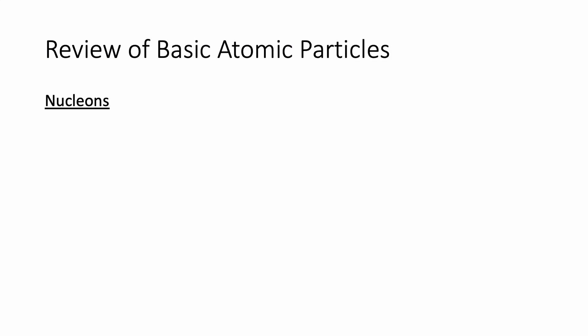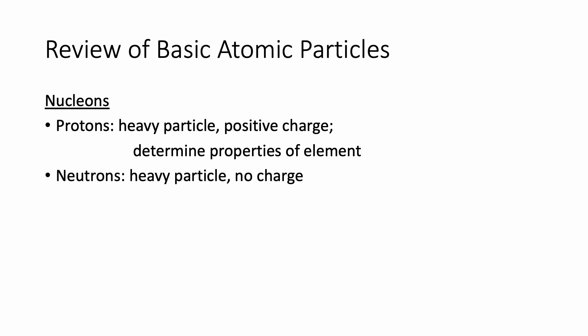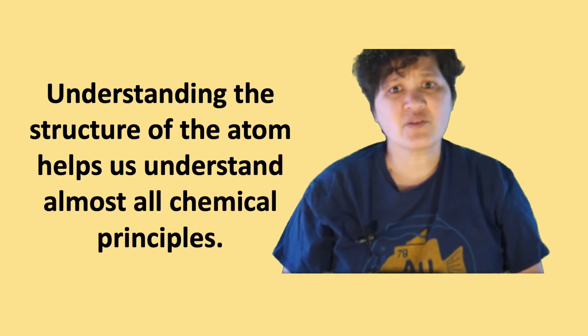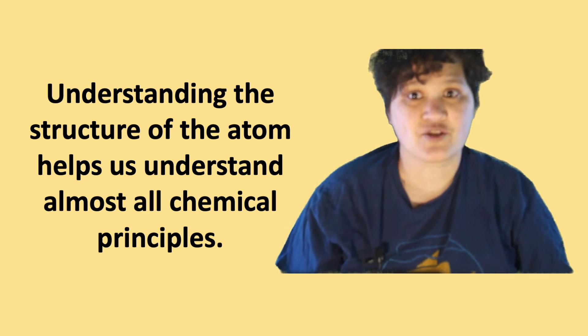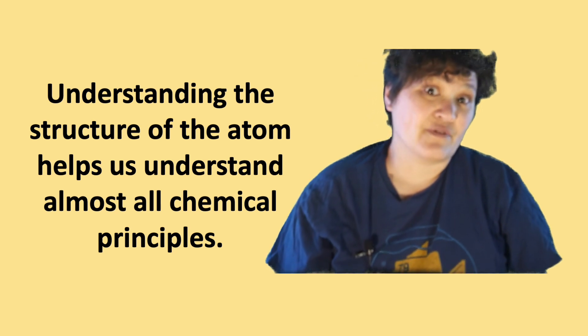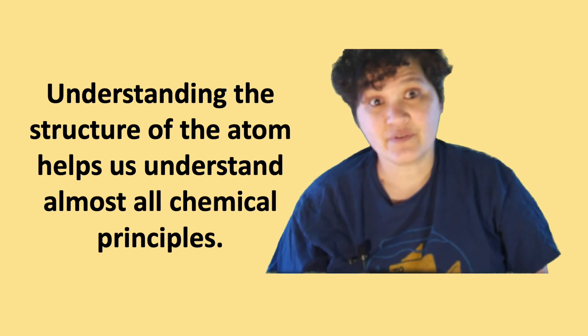Okay, so quick summary for our basic atomic particles. We have our two nucleons: protons, which are heavy particles with a positive charge. And basically, those help us figure out what element we have. Neutrons are heavy particles with no charge. Those help to stabilize atoms. And then finally, outside the nucleus, we have our electrons, which are very light particles with a negative charge. So the reason we need to understand atomic structure is that it helps us understand why different elements have different chemical properties, why different elements interact with each other differently.